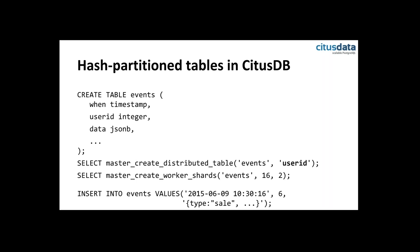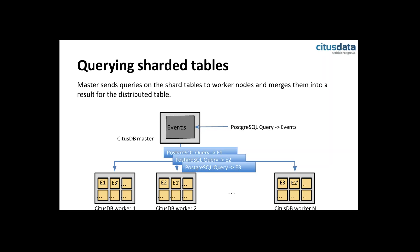Now I want to look at how parallelization actually works. How can we take a query on the distributed table on the master node and chop it into pieces that we can parallelize? We have a master node with a distributed table that a user or application can query, and then there are worker nodes which store the shards in that table as regular PostgreSQL tables. The master will start connecting to the workers and running multiple queries on all those different shards.